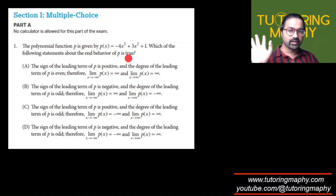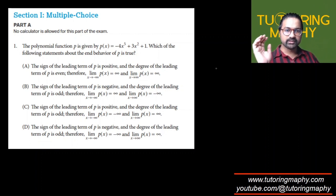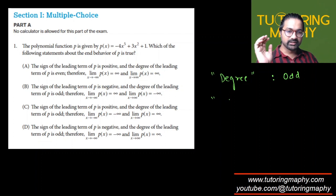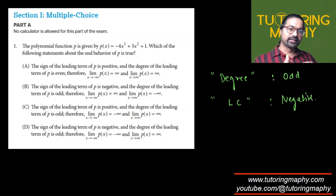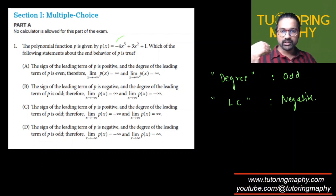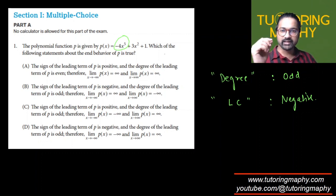Without even reading the answer choices, we have a very straightforward rule: if the degree of the polynomial is odd and the leading coefficient is negative, then the more negative we go in the x-axis, this term will keep becoming positive because it's an odd power. So the negative comes out and is multiplied with the negative leading coefficient, making it positive.